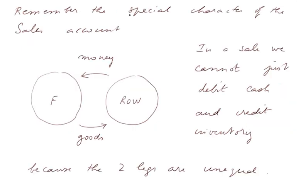Remember the special character of the sales account. Here is a naive representation of a sale, a transaction. Goods leave the firm from the stocks and go to the rest of the world. And money, in payment of the goods, leaves the rest of the world and comes into the firm. But in a sale, we cannot just debit the cash account or whatever account receives the payment and credit the inventory of goods. Why? Because the two legs are unequal, that is, have different values.